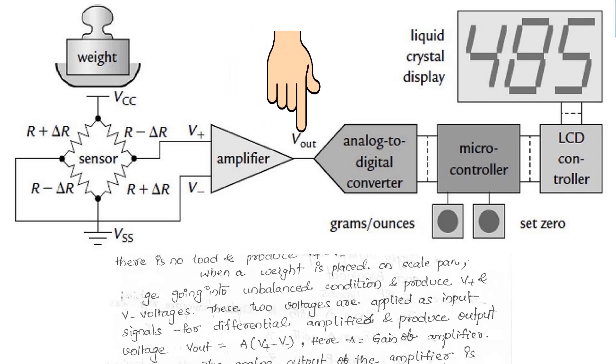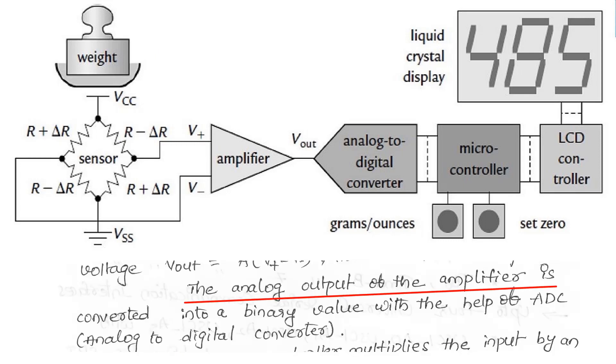Here, A is the gain of the amplifier. The analog output of the amplifier is converted into a binary value with the help of an ADC.